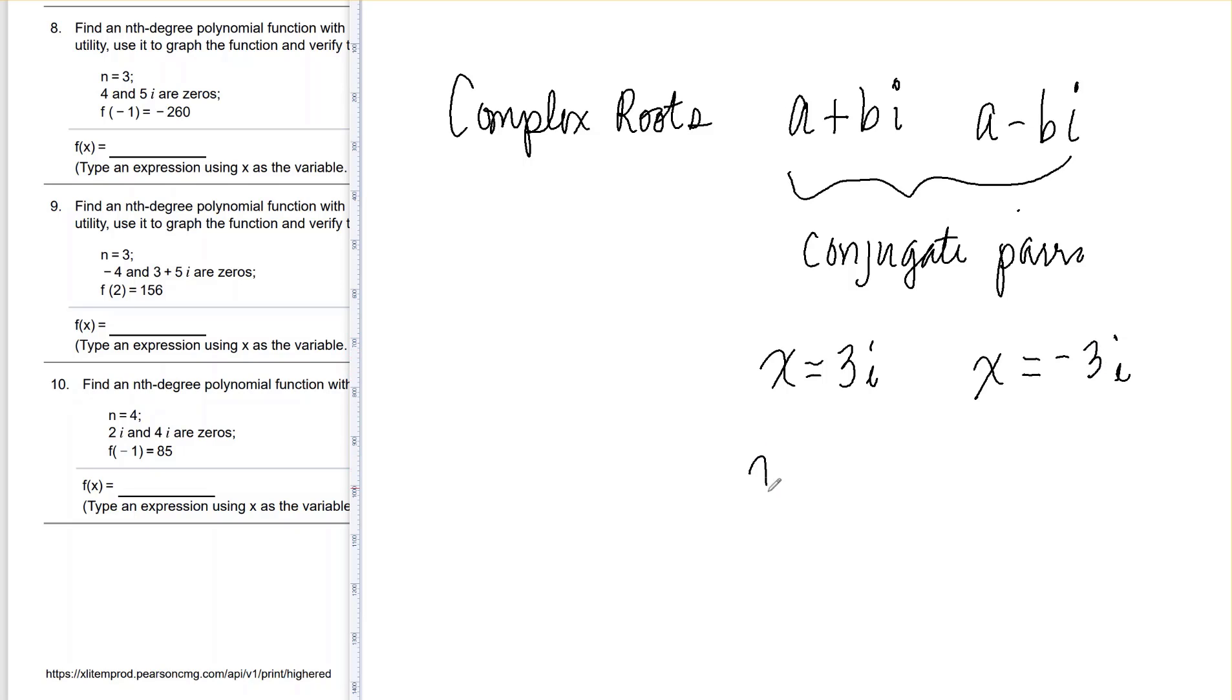If you solve and you get x equals 3i, that means that x also equals negative 3i. If you solve and you get x equals 6 plus 2i, that means that x would also for that same polynomial have to be 6 minus 2i. So we'll use this principle of conjugate pairs for complex roots to do numbers 8, 9, and 10.